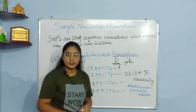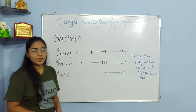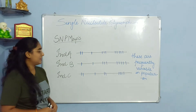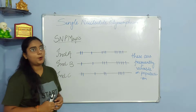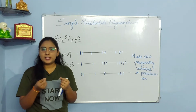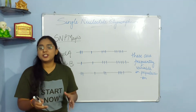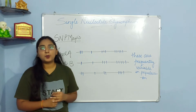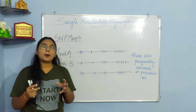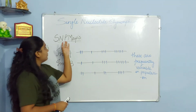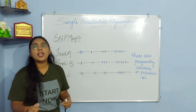Ab hum Single Nucleotide Polymorphism aur uski mapping ko samajh lete hain. SNP maps — map kya hota hai yeh toh sabhi ko pata hoga. Map matlab ek easy tariqa jisse hum log yeh jaante hain ke koi cheez kahan par exist karti hai, jaise India ka map hota hai, kisi jagah ka map hota hai, aapke ghar ka map hota hai. Usi tarike se hum ek DNA ki sequence ka bhi map bana sakte hain.